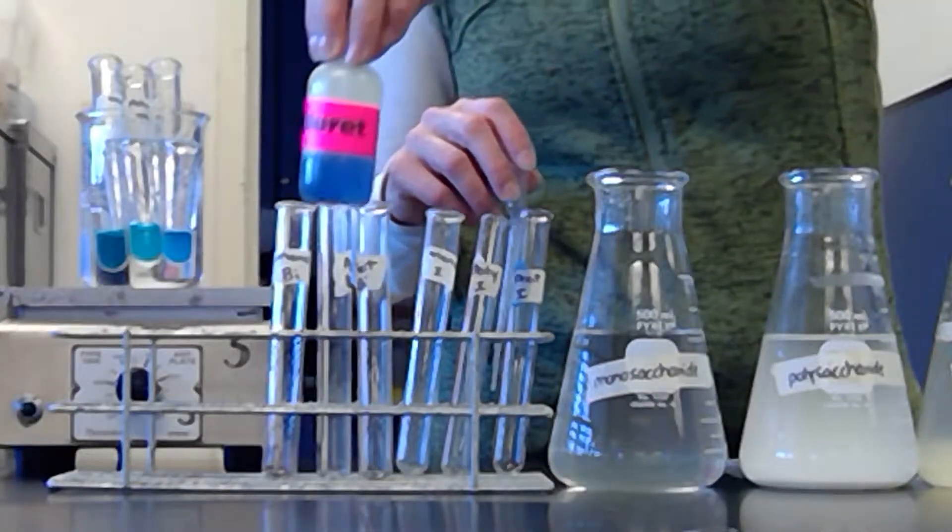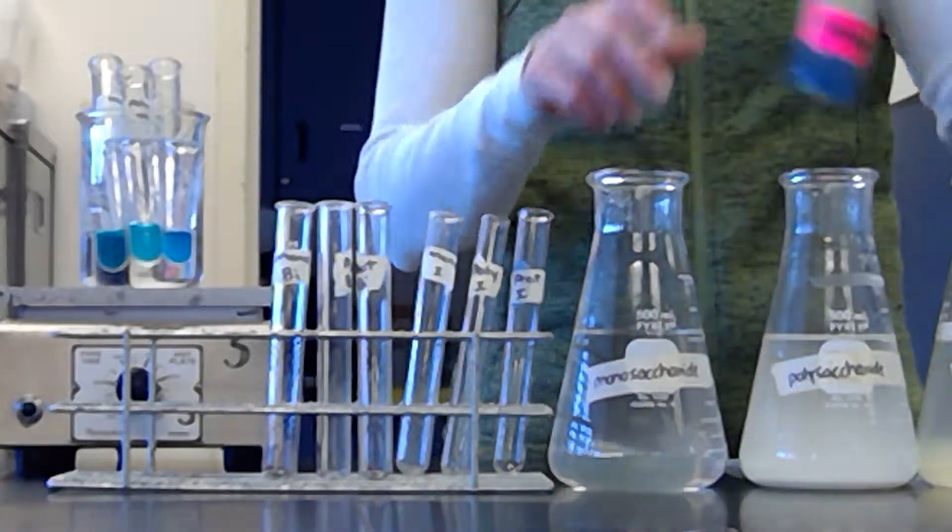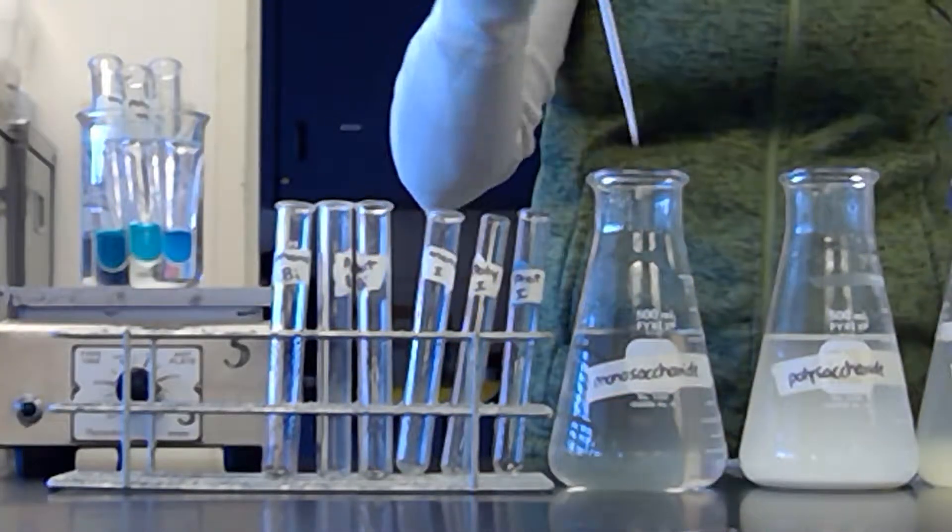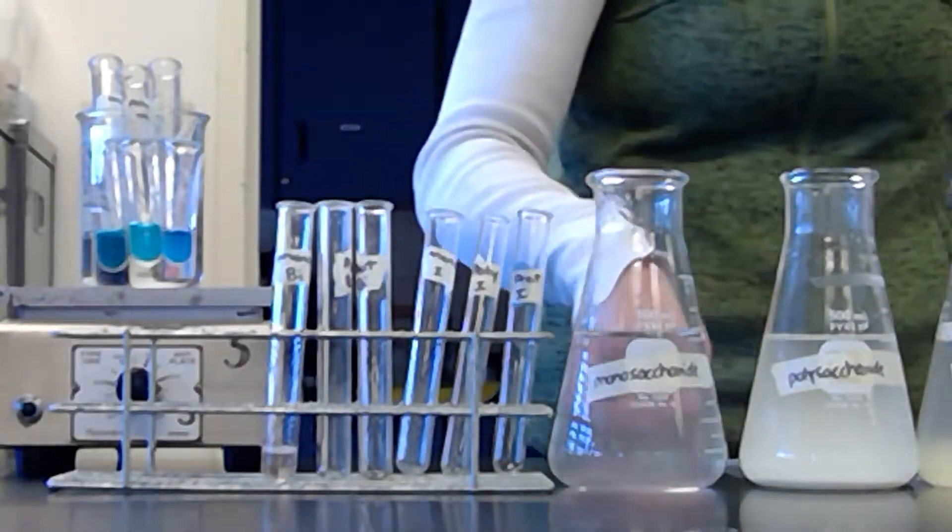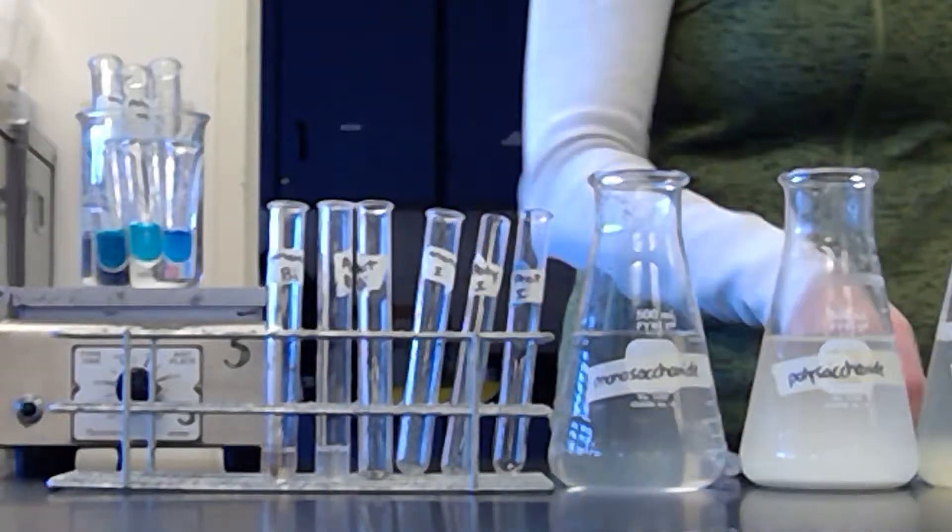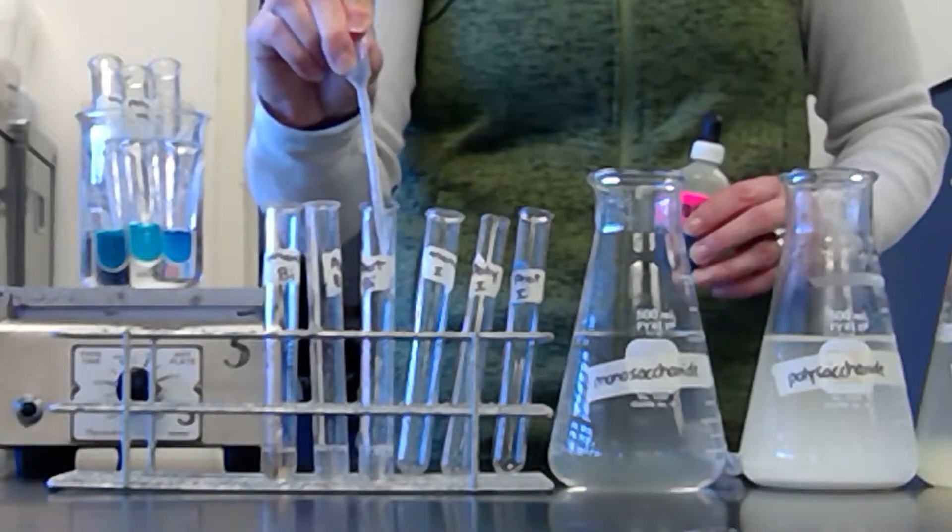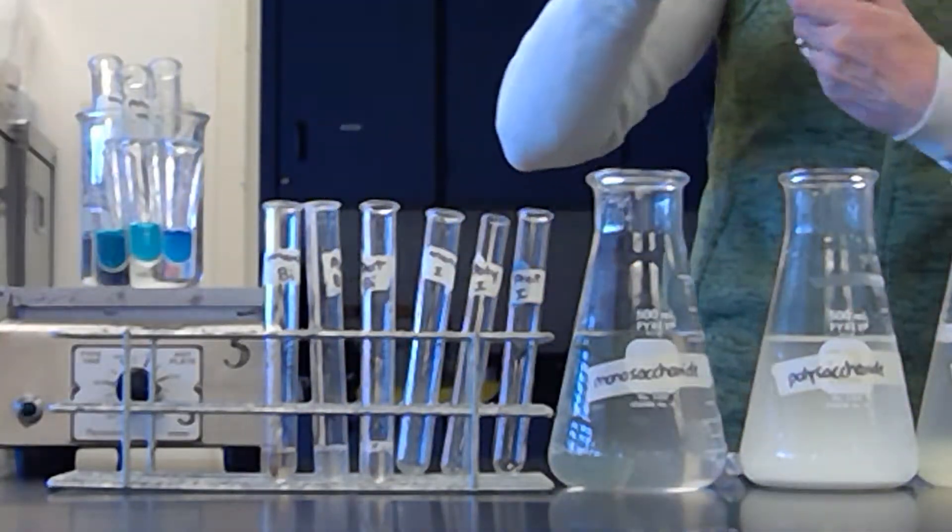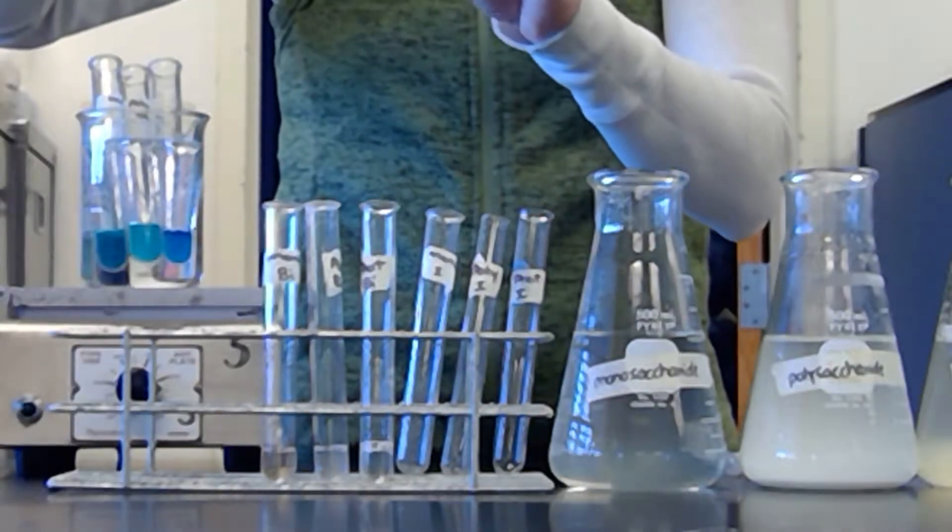And now I'm going to take the biuret. And remember, it was like this weird kind of purpley. The other was more of a bright blue. So I'll just take a squirt and I will add these in. So I have my monosaccharides, I have my polysaccharides, and then I have my proteins.